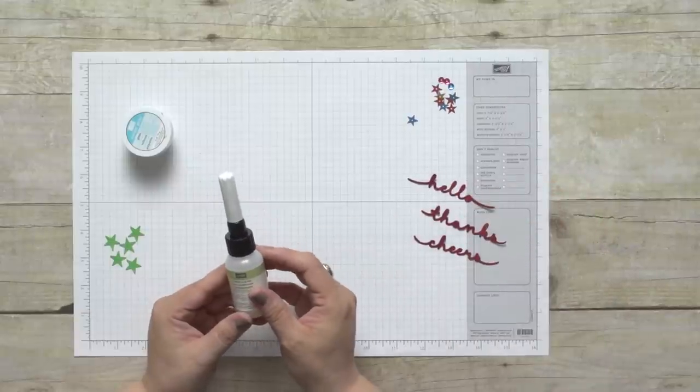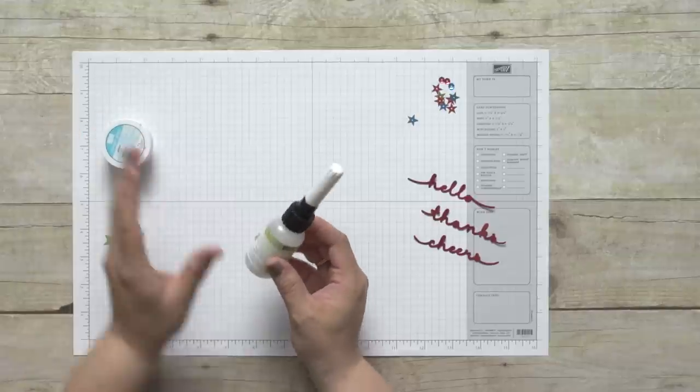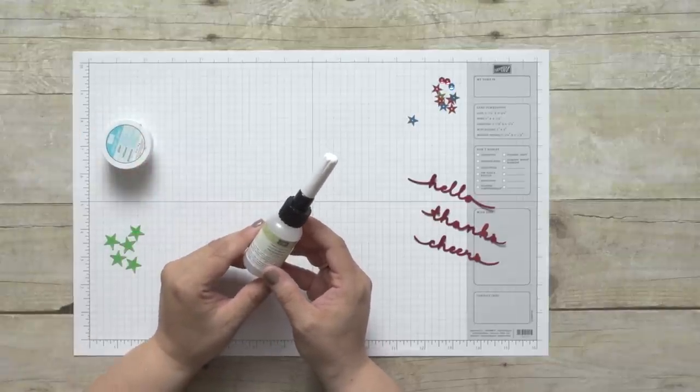You can even write words with the glue and then you can add glitter. It makes it so that you can have your projects be uniquely you. When you only need a little bit of glue, it's also helpful when you want to add glitter or some small cutout.